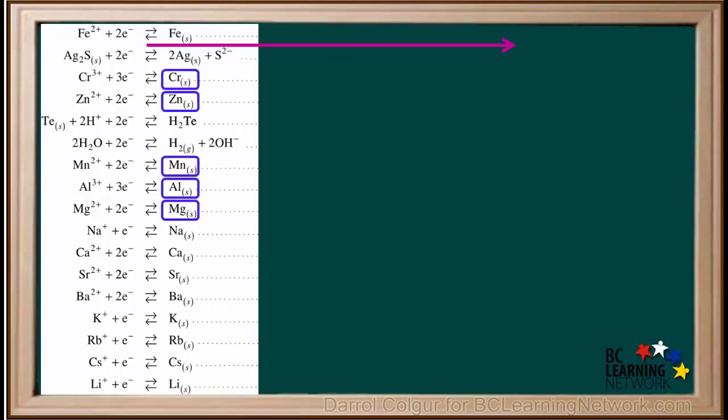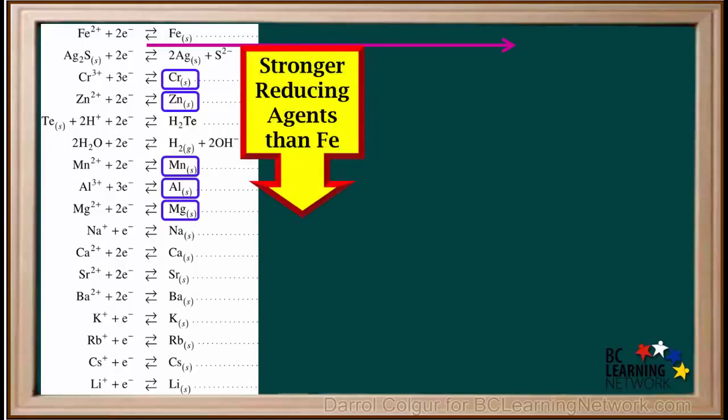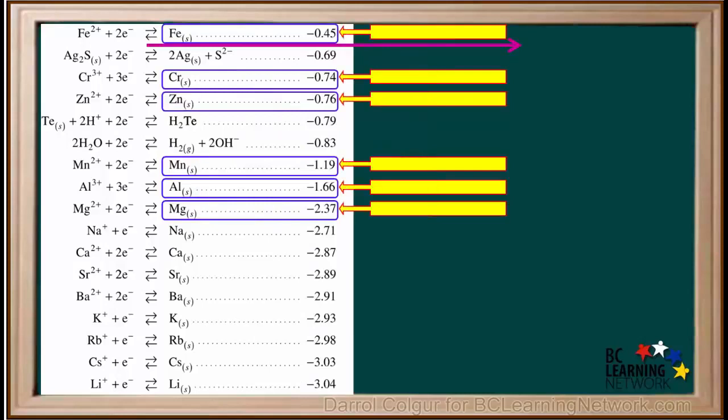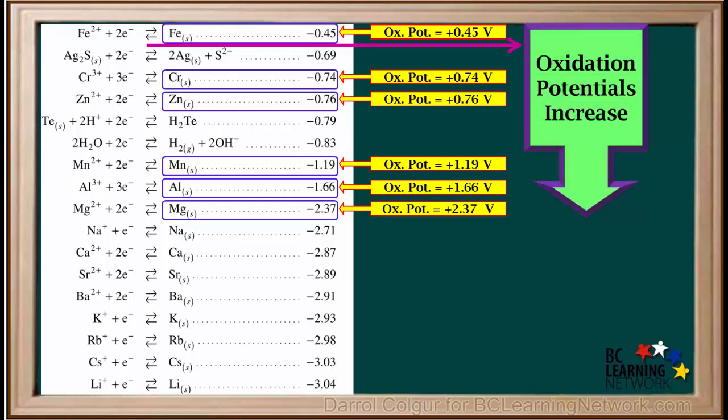Metals below iron on the right side of the table are stronger reducing agents than iron, which means they are more easily oxidized than iron. Remember, oxidation potentials of these are just these values with their signs switched. So the oxidation potentials of these metals are all positive. Notice that as we move down, their oxidation potentials increase from positive 0.45 volts for iron to positive 2.37 volts for magnesium.